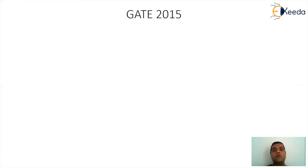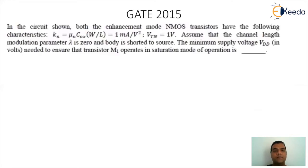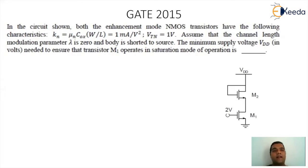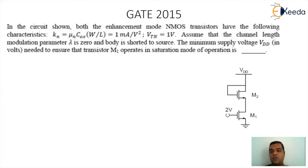This question is from the GATE 2015 paper. The circuit contains enhancement mode NMOS transistors with: Kn = μn·Cox·(W/L) = 1 mA/V², VTN = 1V. Assume λ = 0 and body shorted to source. We need to find the minimum supply voltage VDD to ensure MOSFET 1 operates in saturation. The circuit has two MOSFETs, M1 and M2.